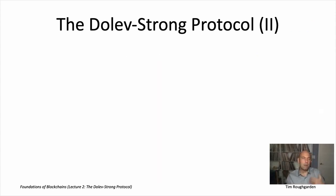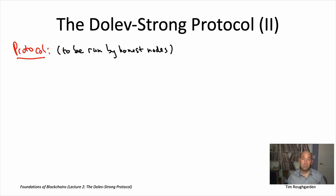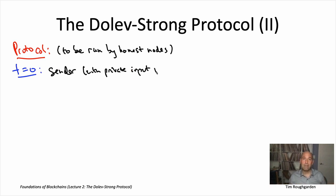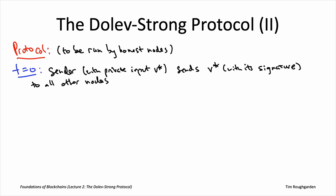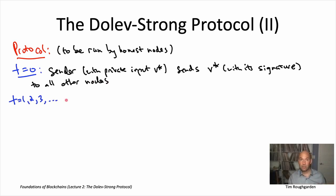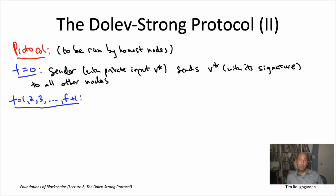Moving on to the protocol description — remember, this is the protocol run by the honest nodes; Byzantine nodes can do whatever. At time T equals zero, an honest sender simply tells all the other nodes what its private input is, signing it. Then we have multiple rounds of cross-checking. With every additional faulty node we want to tolerate, we need one extra round. The last time step is time step F plus one, at which point the protocol halts and all nodes compute an output. This makes sense because we assume the bound on the number of Byzantine nodes, the parameter little f, is known up front.